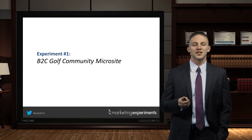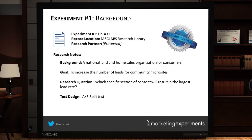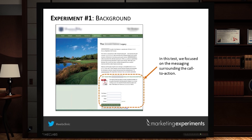Let's start with the first experiment: a B2C golf community microsite. We were working with a research partner — a national land and home sales organization — to increase the number of leads from a community microsite. Visitors are coming to the site trying to make a decision about buying a home or land, and this is a tool to help them do that. Our question: which specific section of content will result in the largest number of leads? This is the control, and we're focusing specifically on the messaging surrounding the call to action.